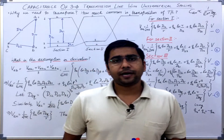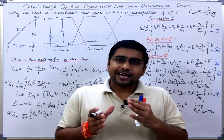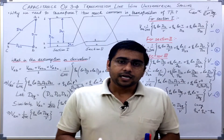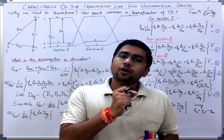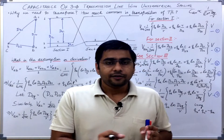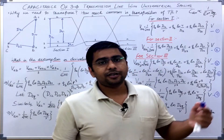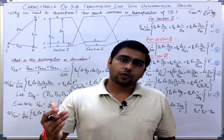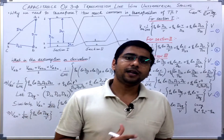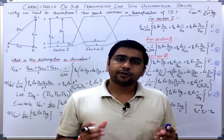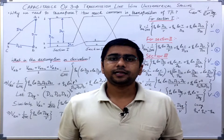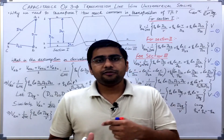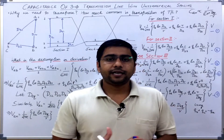But for the derivation part, we will consider that the line is transposed — that is, each phase conductor will occupy the position which will also be occupied by the other phase conductors for an equal length. So every conductor goes to every possible position and occupies that position for an equal length, so that the capacitance which we derive can be equal or very close to equal if we take the average.